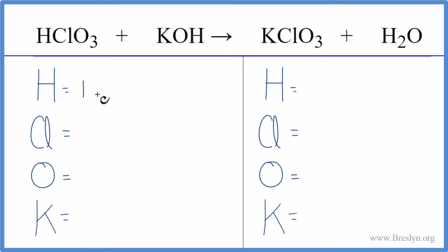We have one hydrogen here, plus, make sure you count the one over here, that gives us two, one chlorine, three oxygens, and we have another oxygen right here. So we have to add that, four, and then potassium, we just have one.